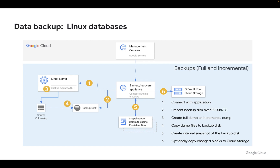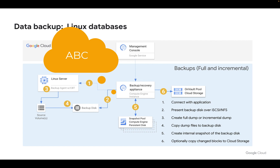You also have the option, if you do not want to use logical volume snapshots, to do what we call full and incremental snapshots. This is more old school — we effectively dump the database on a Sunday, do incremental backups through the week, and then do another dump again the following Sunday. Full and incremental backups run effectively the same way: we talk to the application, present the staging disk, copy the full dump or the incremental, make an internal snapshot, and then offload that to on-vault if we want. We also have the option to present an NFS staging disk instead of an iSCSI staging disk.